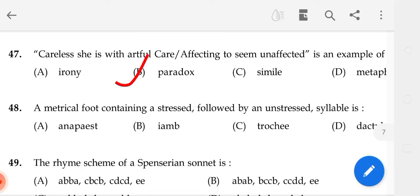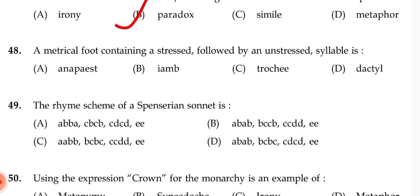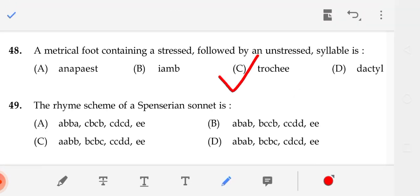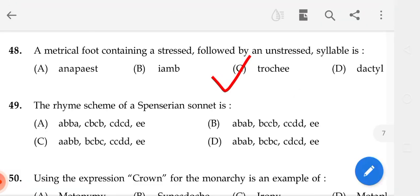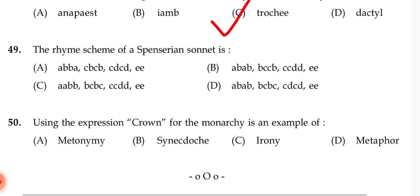A metrical foot containing a stressed followed by an unstressed syllable is — the correct answer is C — trochee. Please go through it; I will not explain here as it will consume time.